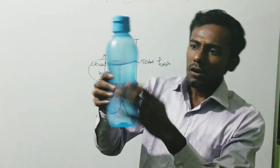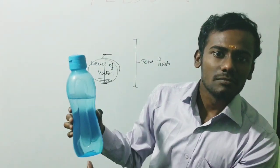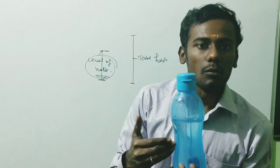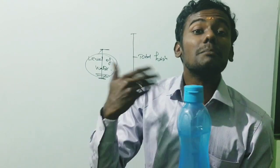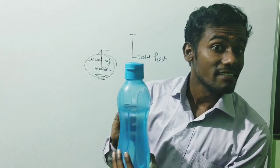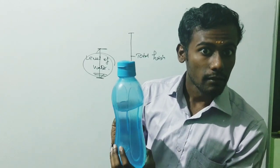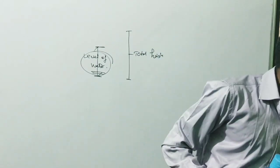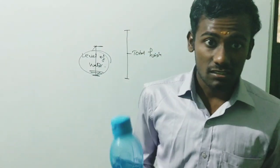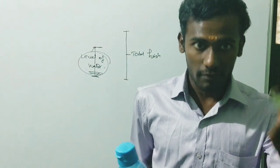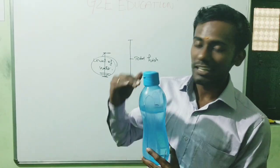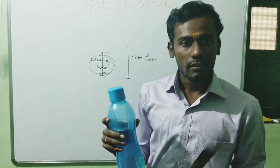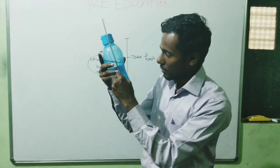So what is the percentage of water inside this bottle? We have to calculate. For that I take the scale. Step one: I should measure the total height of the water bottle. Let's check what is the height of the water bottle.